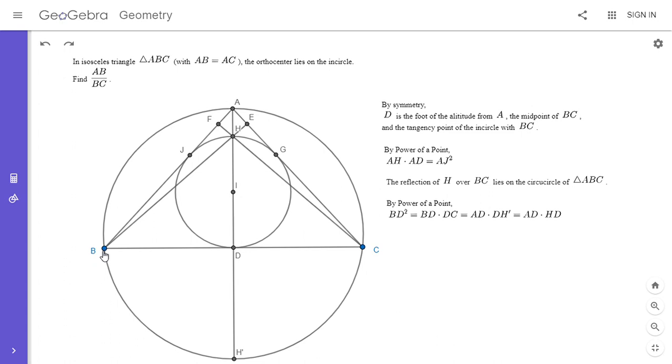And so now if we use power of a point, we have, so BD squared is obviously equal to BD times DC because by symmetry BD is equal to DC. And then by power of a point, that's equal to AD times DH prime. And DH prime is equal to HD because I said H prime was defined to be the reflection of H over BC. And so this is equal to AD times HD. Okay, so we have BD squared is equal to AD times HD.